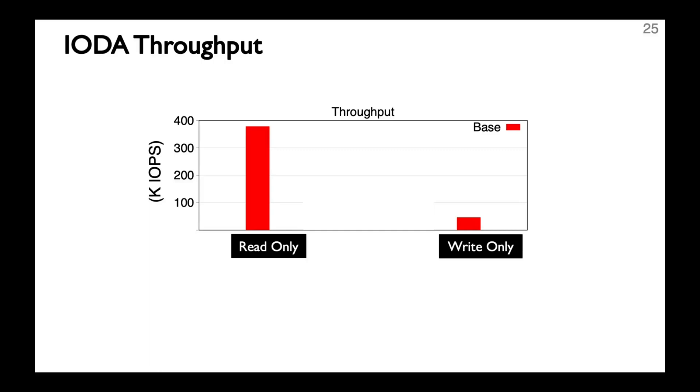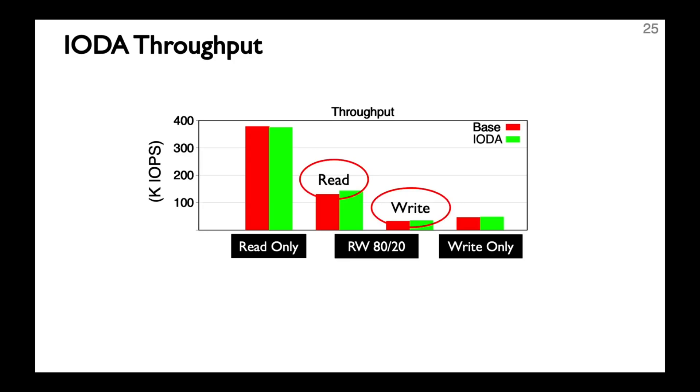Furthermore, IODA design doesn't sacrifice throughput. Here we measure the throughput in IOPS under different scenarios. We can see that IODA delivers similar throughput to the baseline under read-only and write-only cases. Under a read-write mixed workload, we observe that IODA can actually achieve slightly better read and write throughput. This is because IODA can improve the read performance during the read-modify-write process. Overall, unlike other designs which trade throughput for latency, IODA achieves predictable latency without sacrificing throughput.